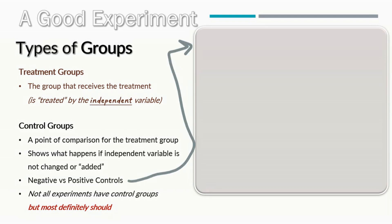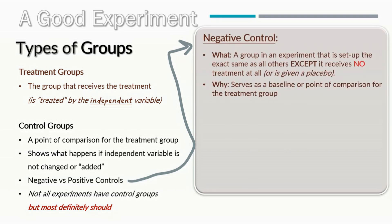Let's break down the difference between negative and positive control groups, starting with negative control groups. Negative control groups are basically a group in an experiment that is set up the exact same as all other groups. It's set up the same as your treatment group except it receives no treatment. The only difference between your negative control group and your treatment group is that the treatment group receives the treatment being tested.